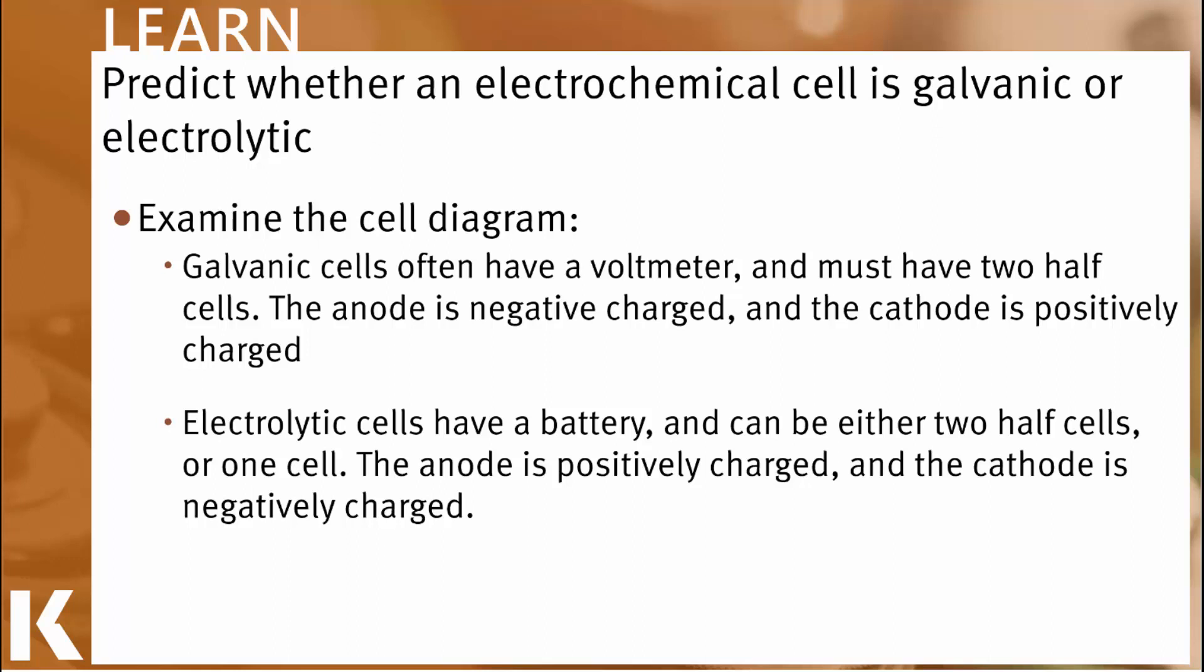So either the calculation approach where we look at the cell potential or by examining all the information from a cell diagram, we can determine what kind of a cell an electrochemical system is. Let's apply these ideas to a few examples.